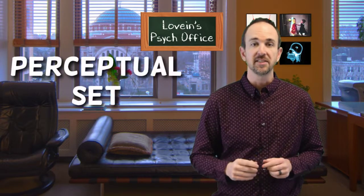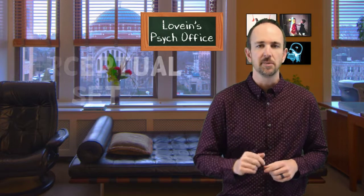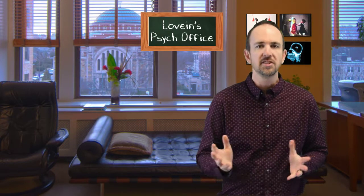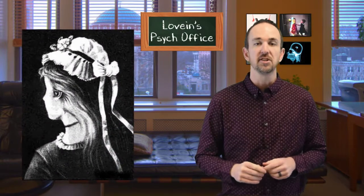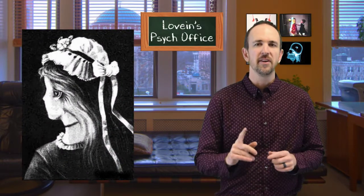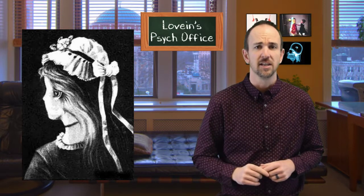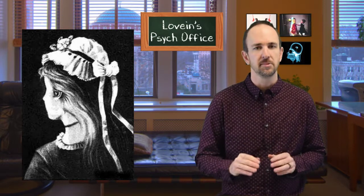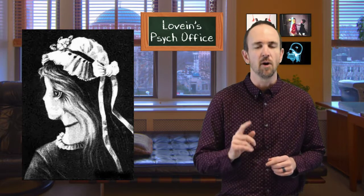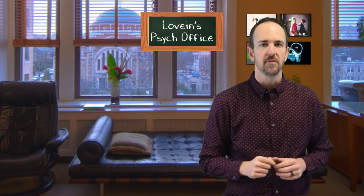A perceptual set is what we expect to see and influences what we do see. A perceptual set is an example of top-down processing. Take a look at this image — what do you see? What if I tell you it's an old woman? Are you able to see her? Now what if I tell you the same picture is an image of a young woman? Can you see her now? This is an example of priming the perceptual set. I was able to influence what you were seeing by telling you what to expect. We will talk a lot about how we visually perceive the world around us.